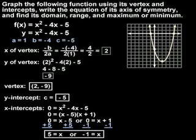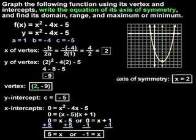We're also asked to write the equation of the axis of symmetry, which is the line that splits the parabola down the middle, as shown on the graph. The equation for the axis of symmetry is always x equals the x-coordinate of the vertex. Since the x-coordinate of the vertex is 2, the equation of the axis of symmetry is x equals 2.